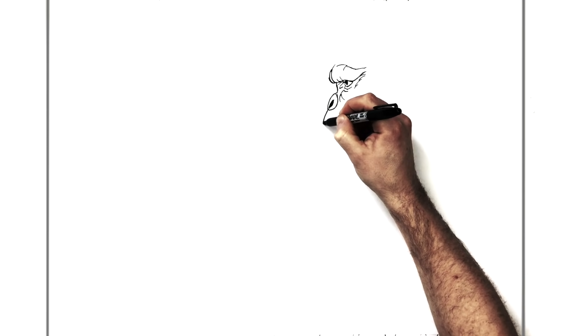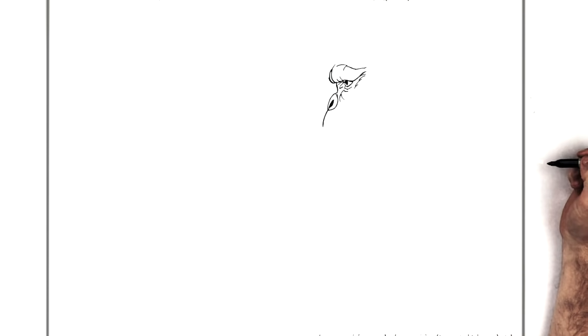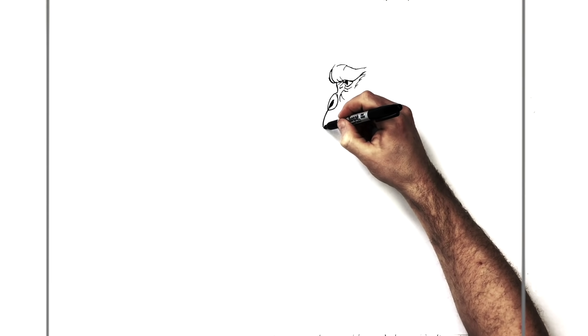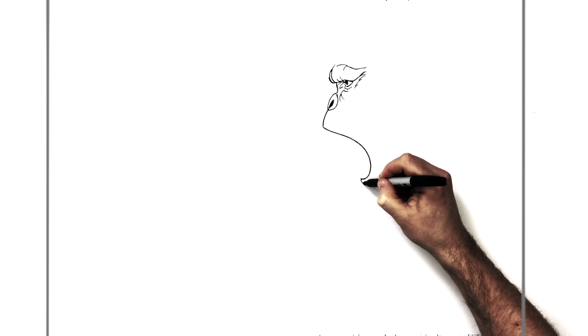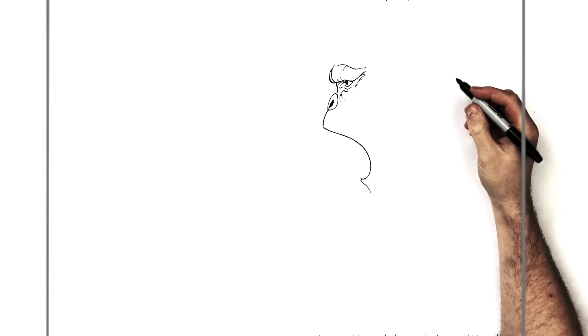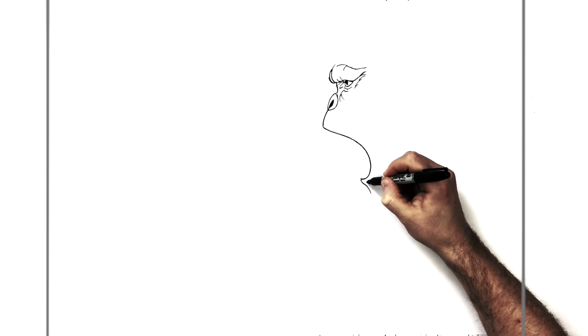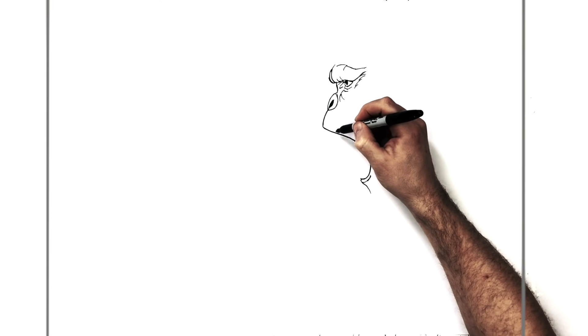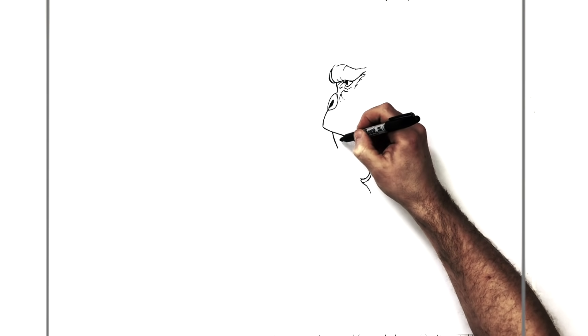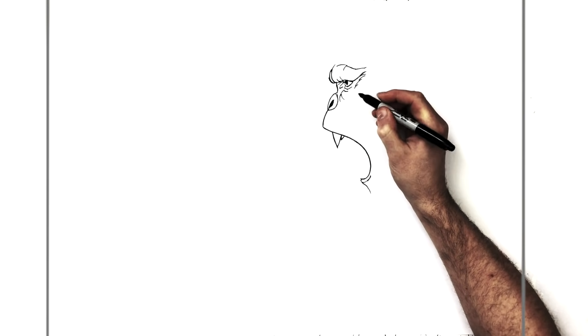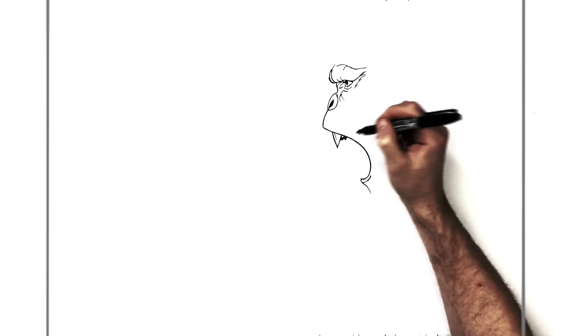His top lip comes down from his nose, curving real big, and then his bottom lip will be like here. He's got big fangs — big spikes down, spikes back up — and then a smaller tooth here and maybe a smaller one there as well. These are kind of rounder with a line on them.